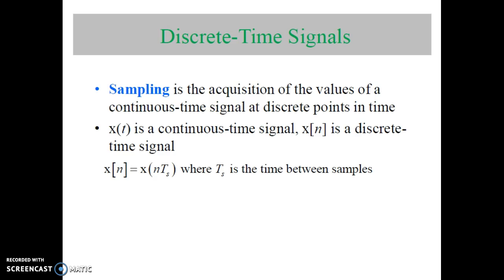First, sampling is the acquisition of the values of a continuous time signal at discrete points in time. If we consider X(T) as a continuous time signal and X(N) as a discrete time signal, then the discrete time signal X(N) is equal to X(N·Ts), where Ts is the time between samples.